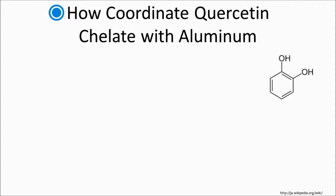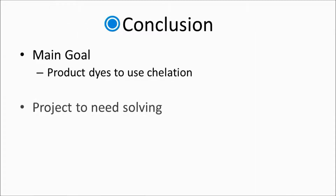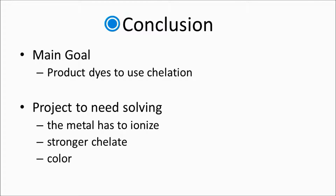In my opinion, we may produce many colored dyes containing many color pigments based on catechol. My main goal is to produce dyes to use in chelation, but we have to solve some issues. One of those is that the metal has to become ionized. Anodization of aluminum is brought about in this way. Aluminum forms an oxide layer when it is anodized. I dye aluminum using a cellular type of oxide layer brought about by chelation. However, this type of oxide layer cannot be formed on other metals, so we have to find an alternate way.